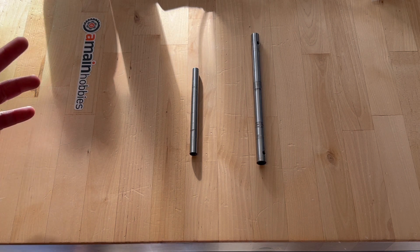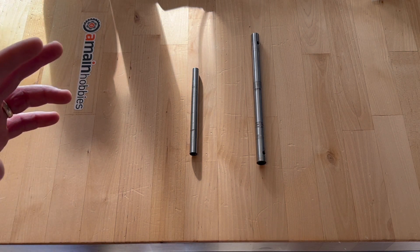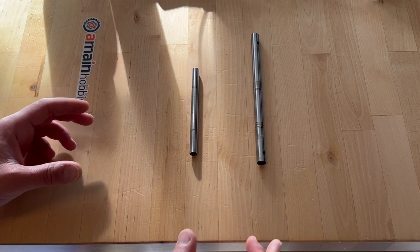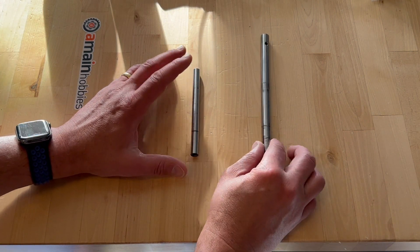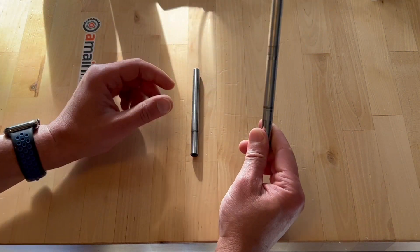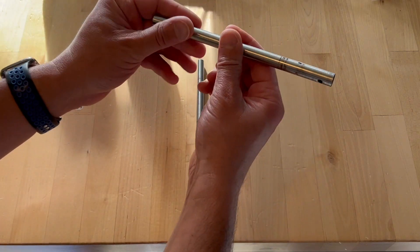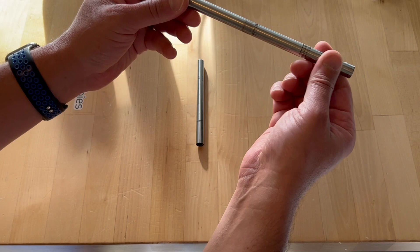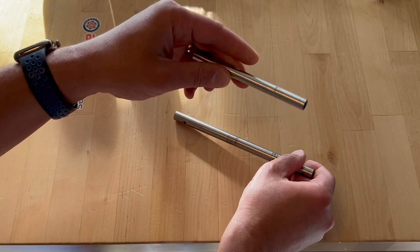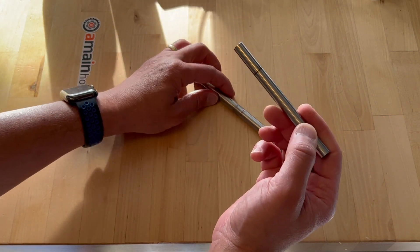I crashed a 700-size helicopter. I am trying to salvage all the parts that I can. I'm trying to determine whether I can use these shafts. This is a main shaft. This is a spindle shaft. Just looking at it, I really cannot tell whether they are straight or if they are deformed. I really can't with the naked eye.